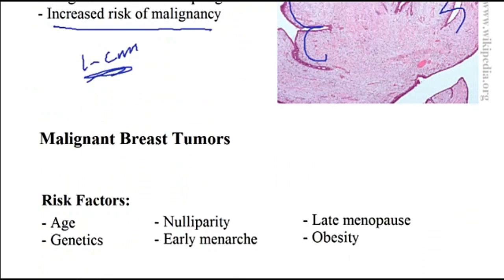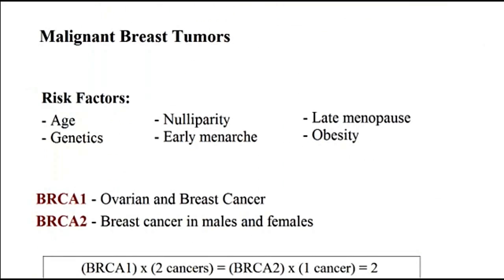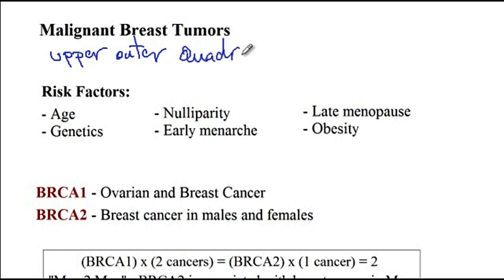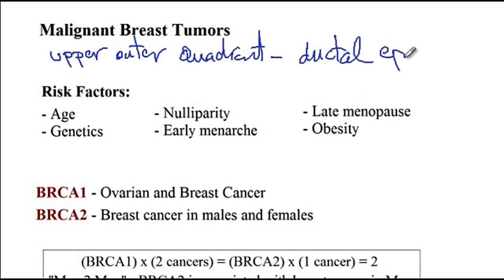Moving on to malignant breast tumors — malignant breast tumors usually develop in the upper and outer quadrant of the breast, which has denser breast tissue. These malignant tumors most commonly arise from ductal epithelium.